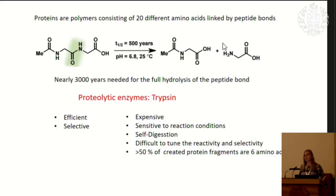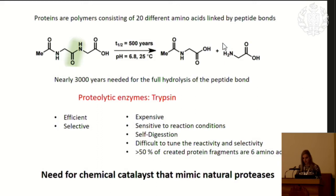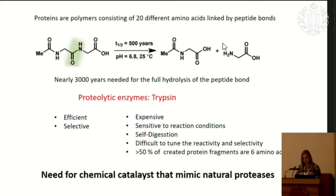The need is to develop chemical catalysts that hydrolyze proteins and create larger fragments, which are easier to identify by mass spectrometry and statistical analysis. Our goal was to develop chemical catalysts — not enzymatic catalysis, but chemical catalysis that mimics natural proteases. We found inspiration in so-called metal proteases: enzymes that contain metals in their active site.